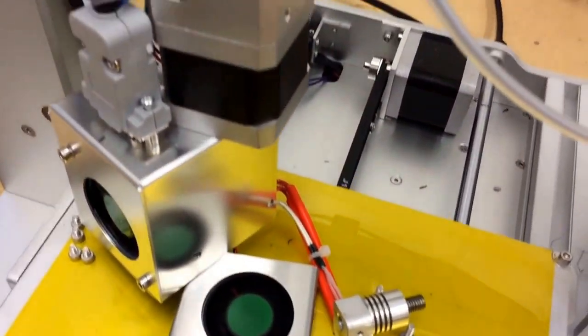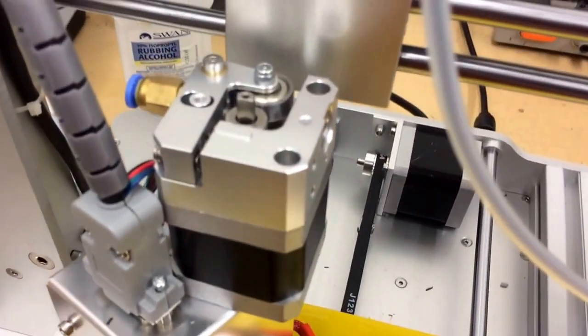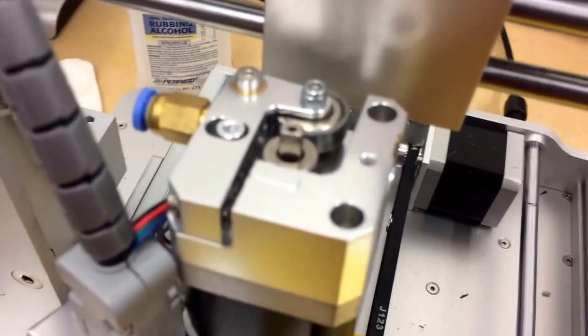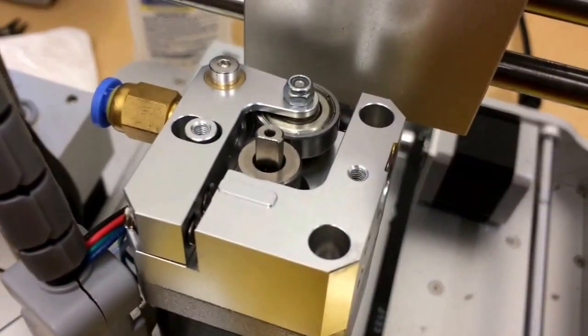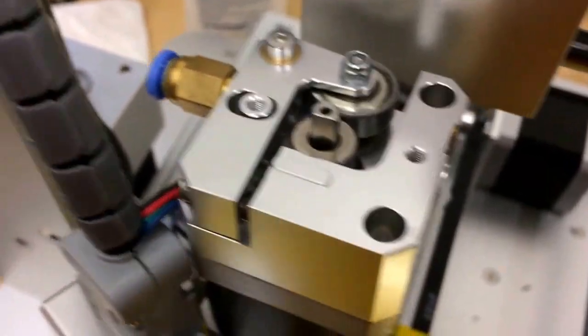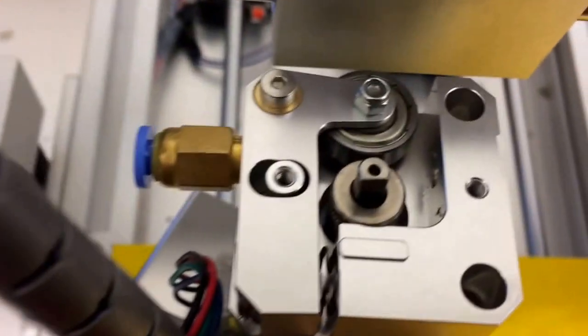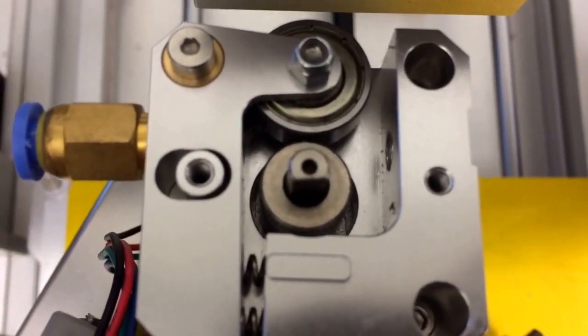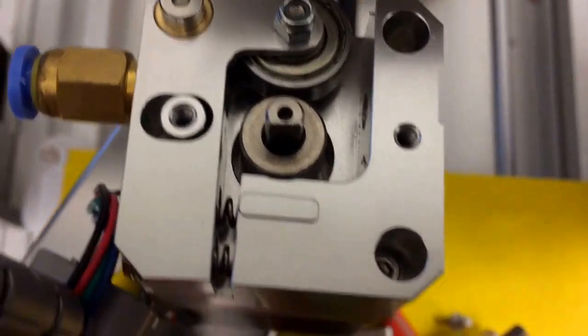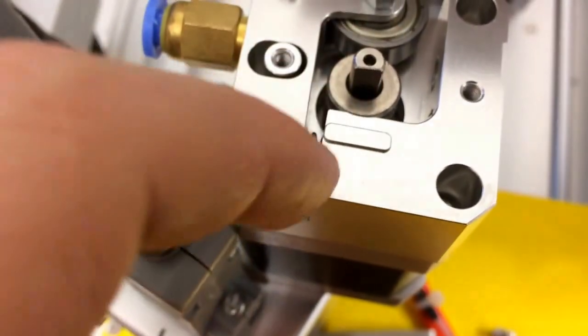So I got my extruder torn apart here and I had a question. I'm trying to figure out why my filament won't feed. I've torn this down to the point where it's entirely free spinning, free turning.